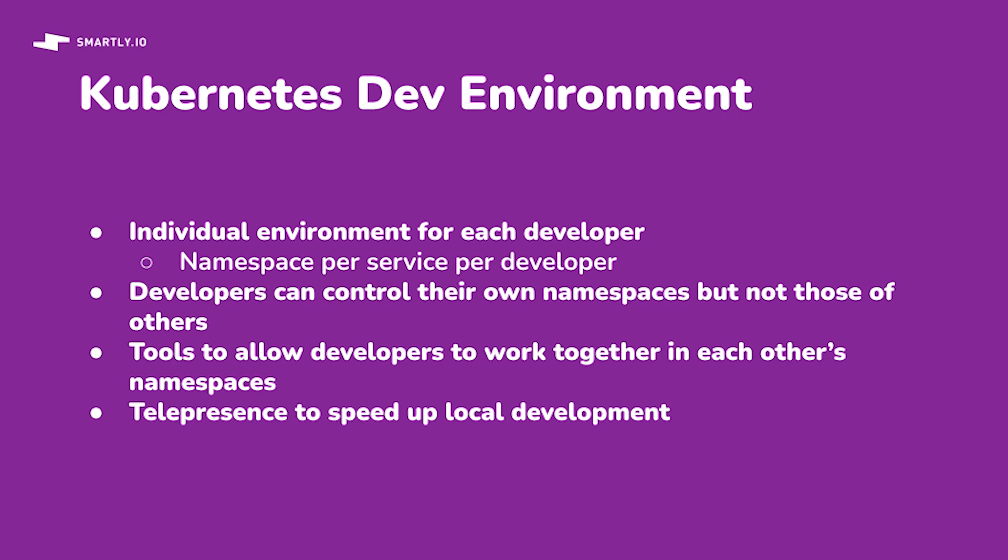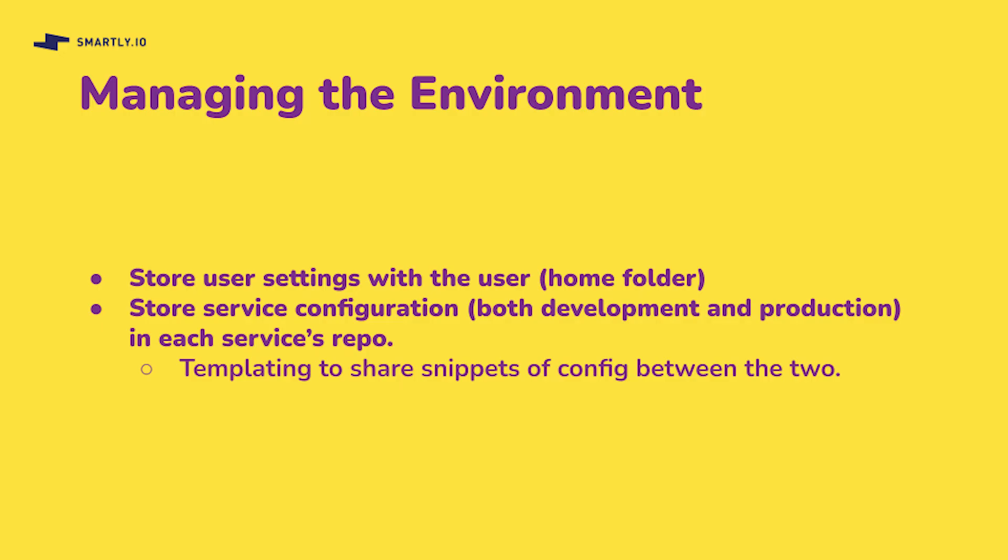Developers can create objects in their own namespaces but not in those of other developers. A developer can also allow another developer to access specific namespaces that belong to them, which allows developers to work on a feature together. We also use Telepresence to allow local development while making services behave as though they were in the cluster. With Telepresence, a developer can run a service locally and avoid building and pushing a new Docker image for every change.